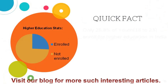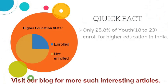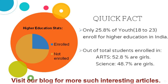Quick Fact: Only 25.8% of youth aged 18 to 23 enroll for higher education in India. Out of total students enrolled, in Arts, 52.8% are girls; in Science, 48.7% are girls.